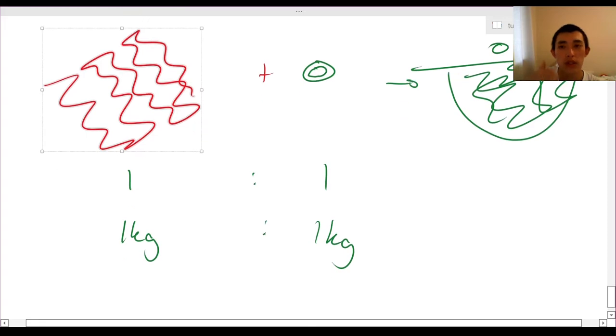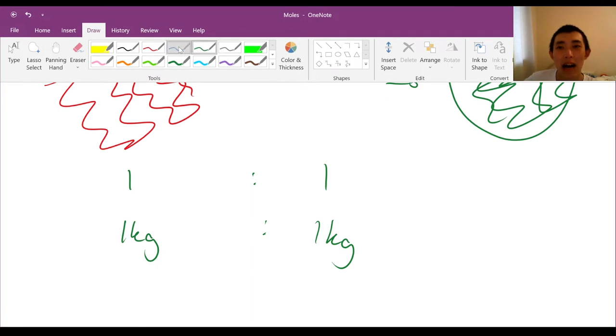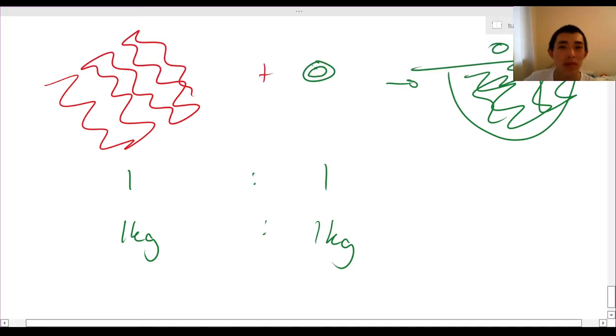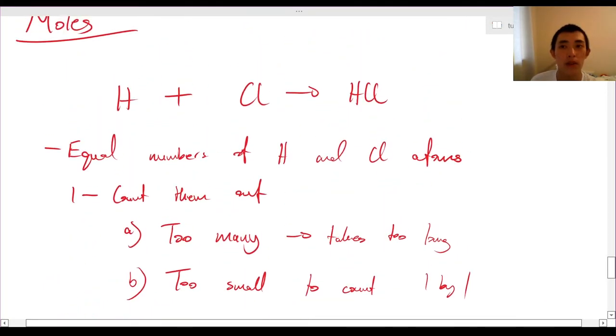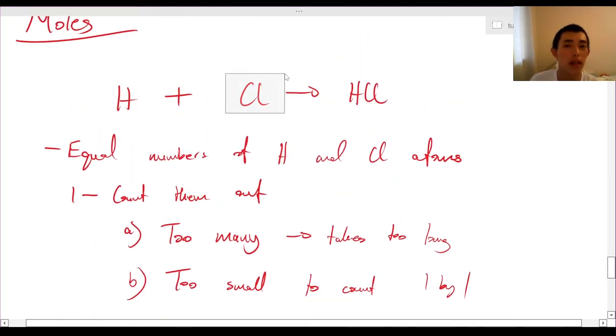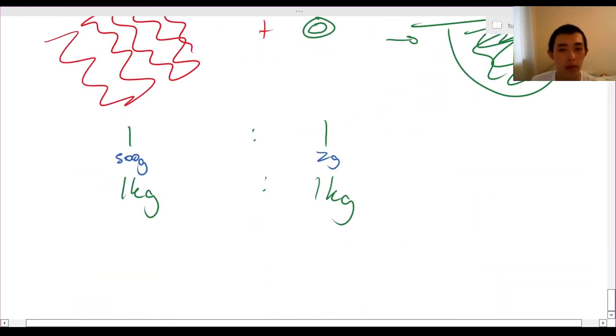And so you can intuitively reason this. And you're like, oh well, Bob, you're stupid, right? Each one of these noodle packs weighs much more than each of these leaves. Each noodle pack might be 500 grams. One of these things might be 2 grams, as in the mass of each unit is heavier. It's different.